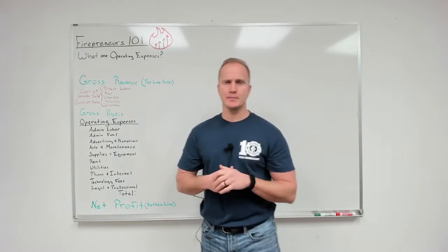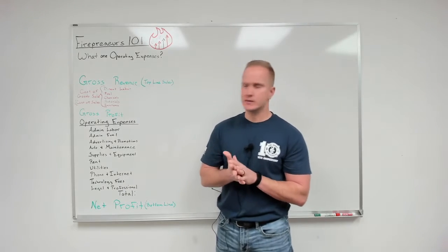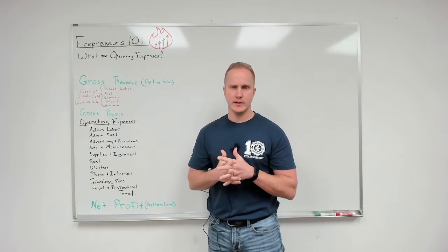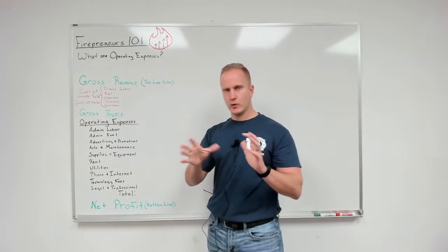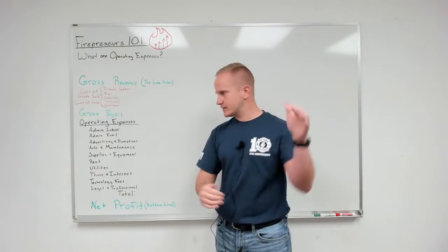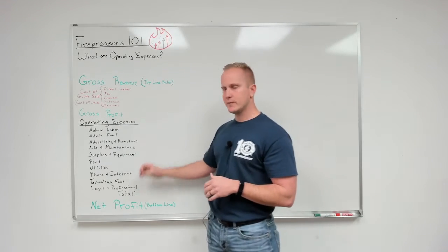Welcome to another episode of the Firepreneurs podcast. Today we're going to jam on our Firepreneur 101 series. We're talking about supplies and equipment, unlike materials which is in our COGS. You might word this differently in your profit loss statement, but in ours we call it materials in the COGS and we call it supplies and equipment down here in the operating expenses.